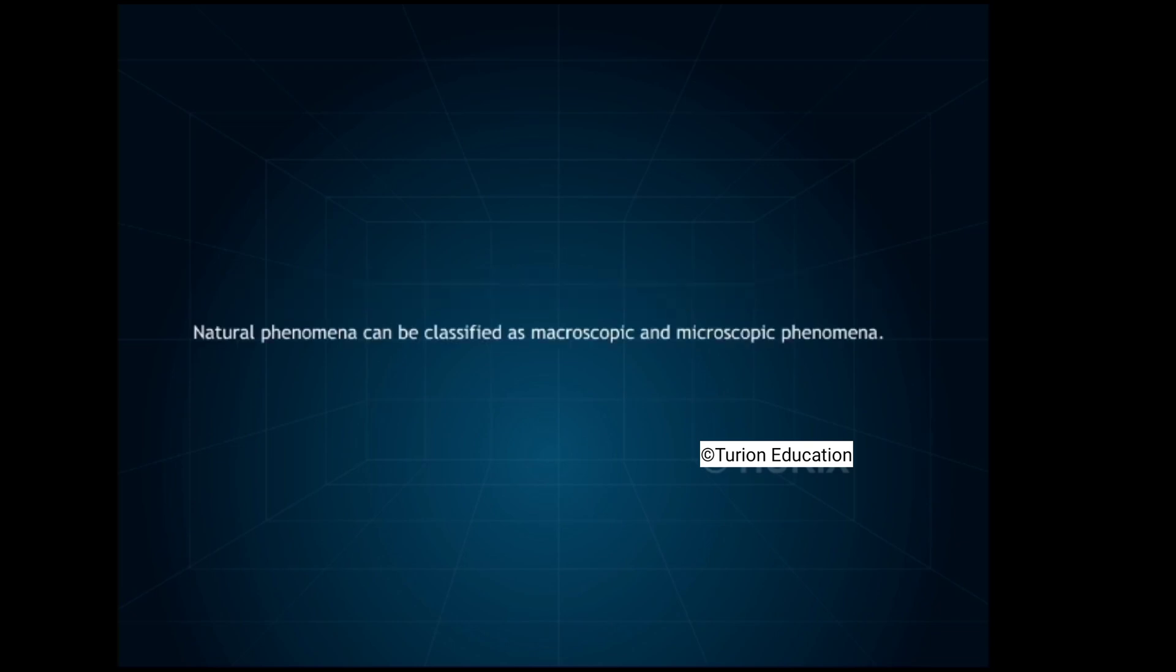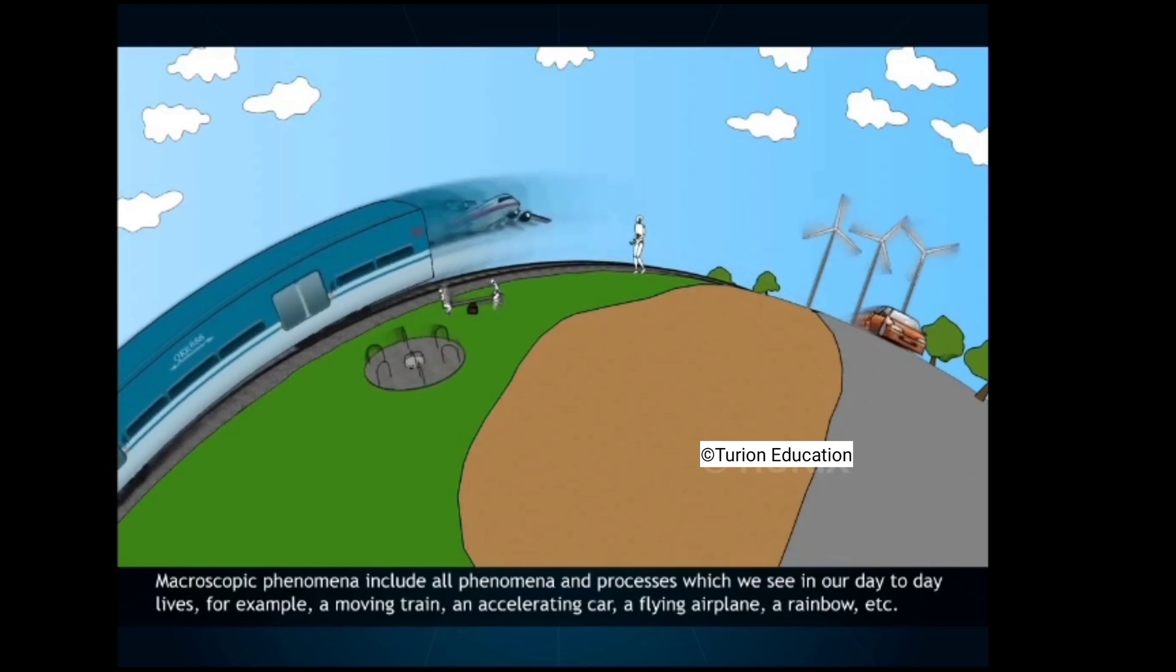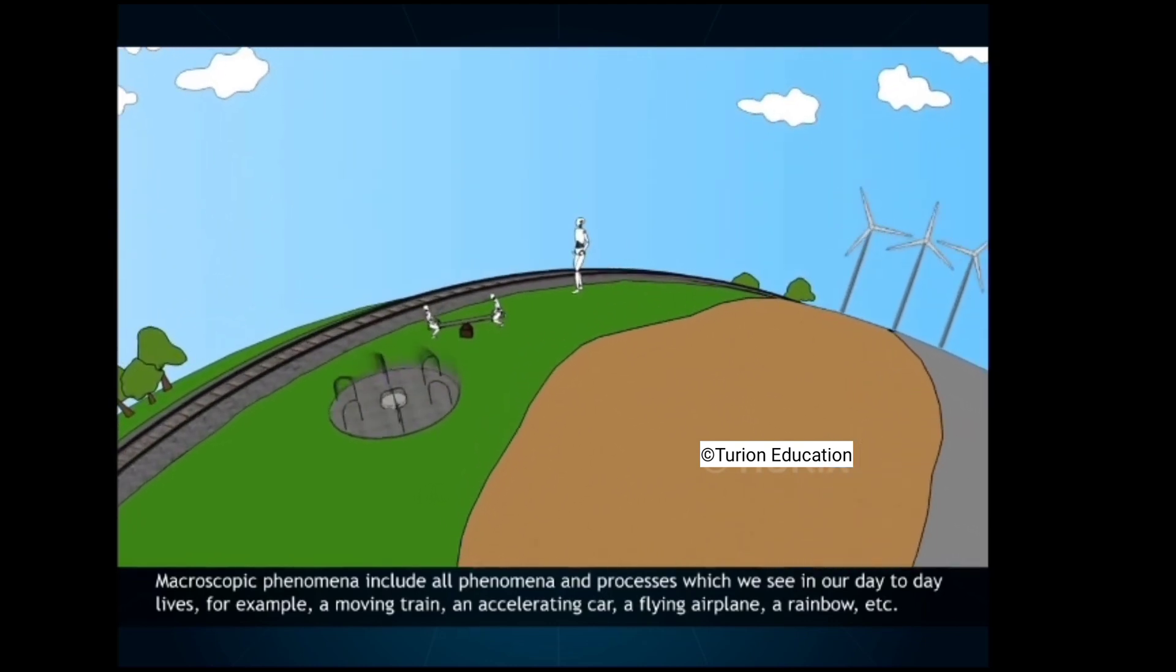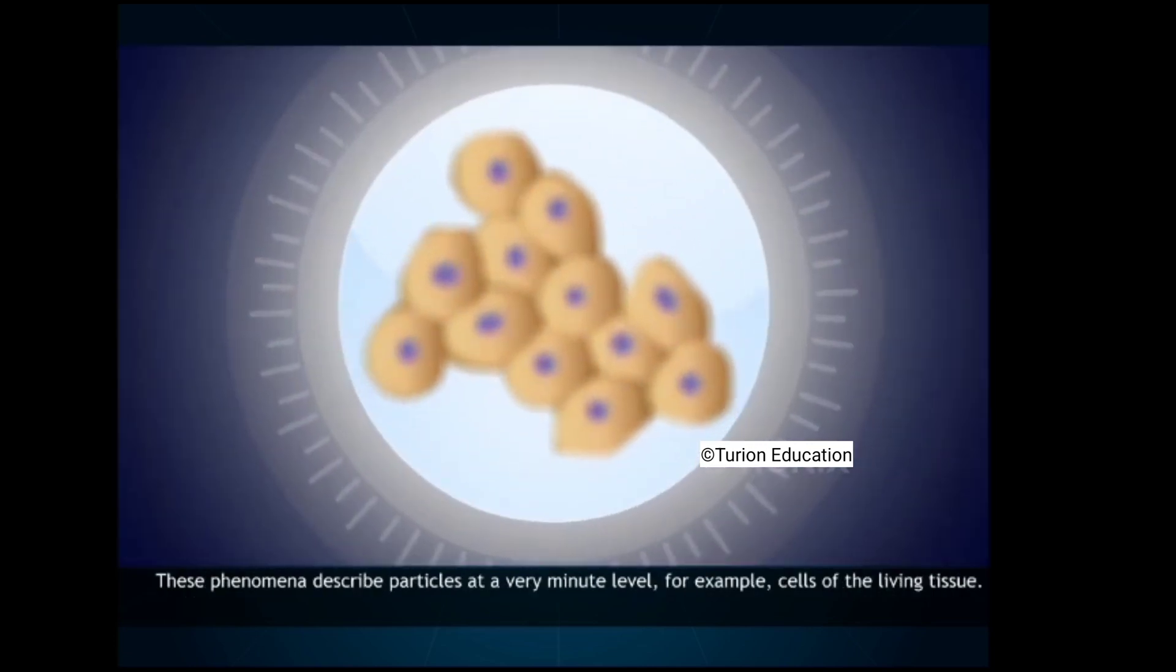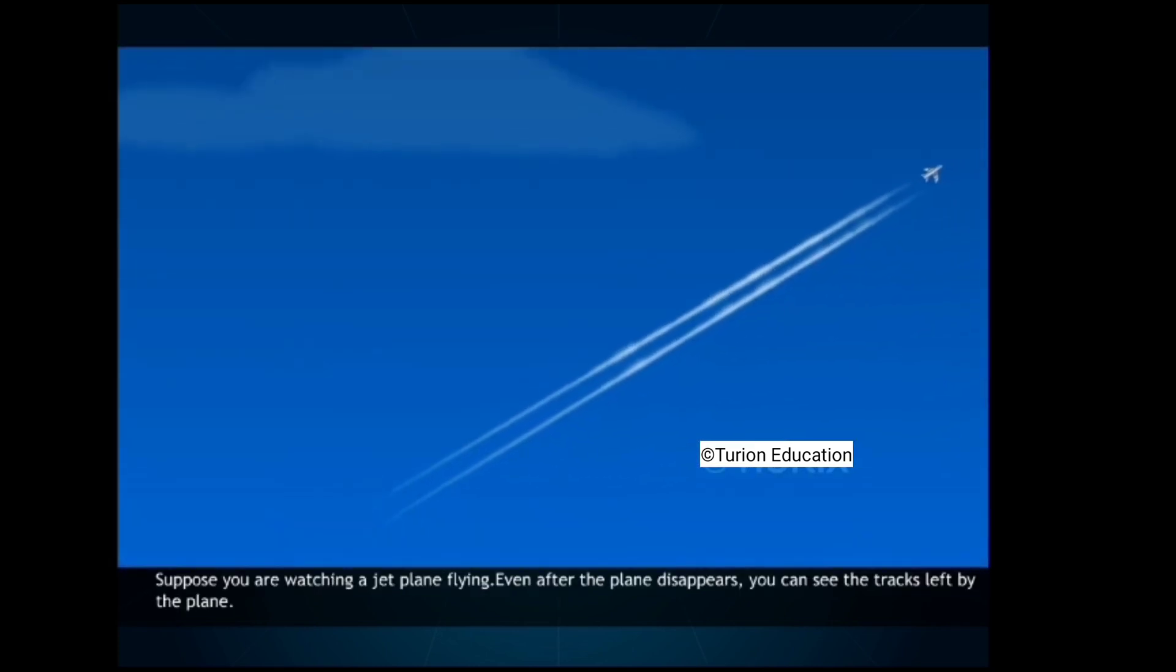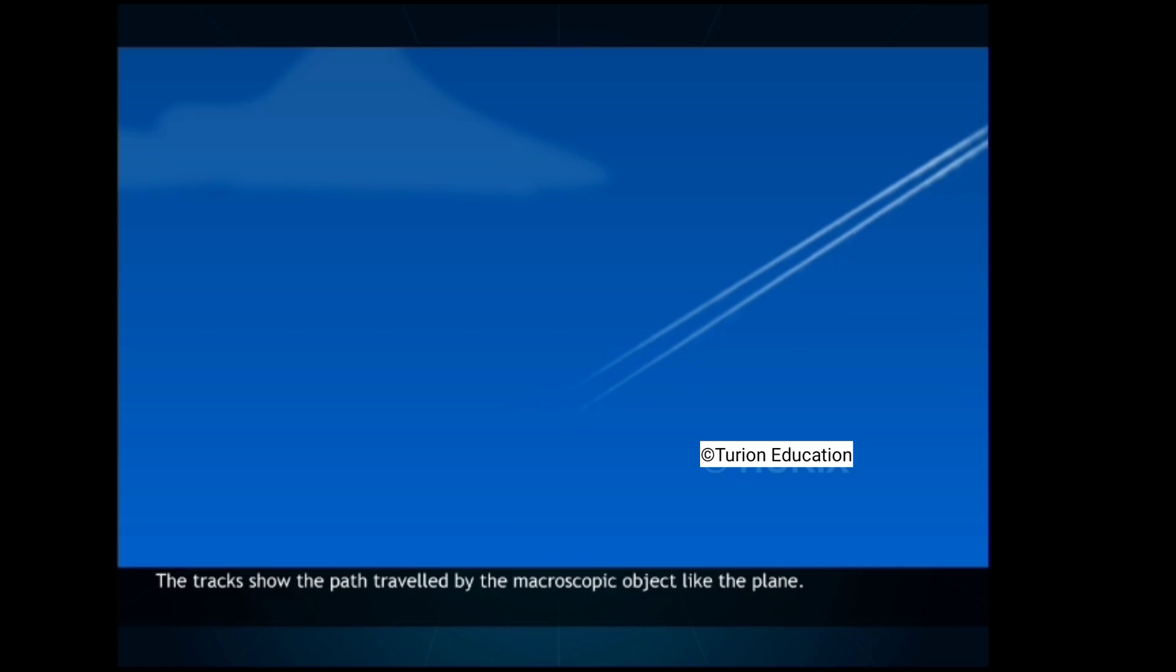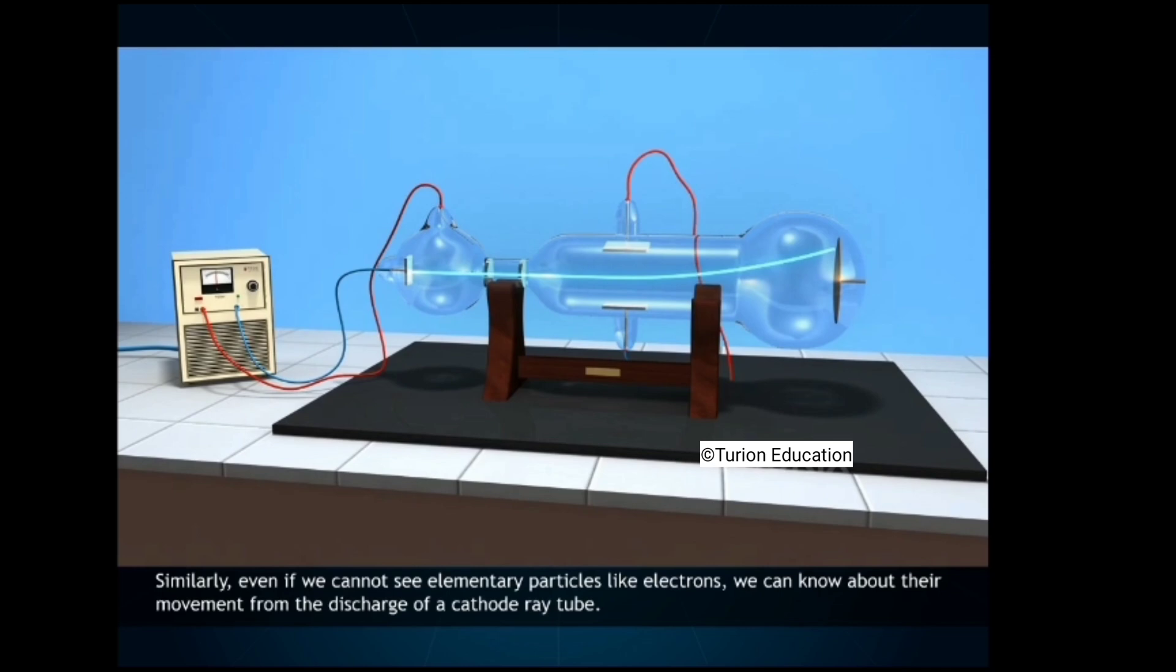Natural phenomena can be classified as macroscopic and microscopic phenomena. Macroscopic phenomena include all phenomena and processes which we see in our day-to-day lives, for example a moving train, an accelerating car, a flying airplane, a rainbow, etc. Microscopic phenomena are those which require highly specialized tools to measure physical quantities. These phenomena describe particles at a very minute level. Suppose you are watching a jet plane flying. Even after the plane disappears, you can see the tracks left by the plane. The tracks show the path traveled by the macroscopic object like the plane. Similarly, even if we cannot see elementary particles like electrons, we can know about their movement from the discharge of a cathode ray tube.